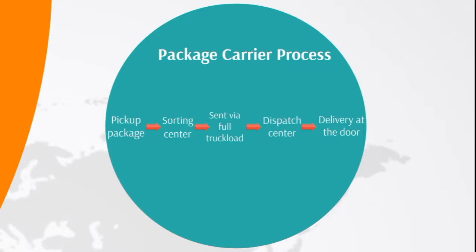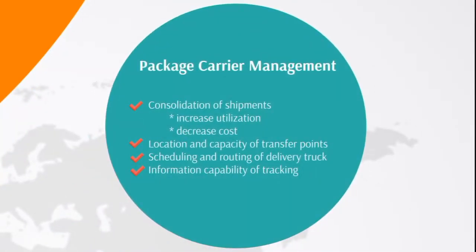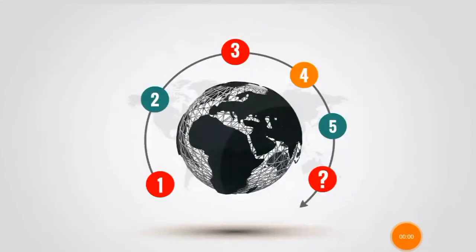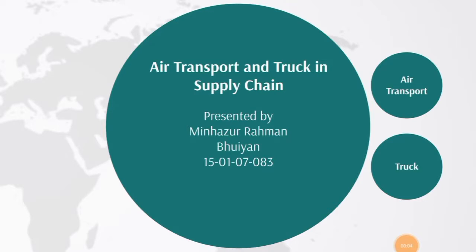Package carrier process. The steps of the package carrier process are: pickup, package sorting center, send by full truckload, dispatch center, and delivery at the door. Package carrier management includes: consolidation of shipments — gathering multiple shipments to one point to ensure proper utilization of carriers; location and capacity of transfer points — the location should be set at suitable places to ensure easy transportation and best service to customers; and scheduling and routing of delivery trucks — to ensure a lesser number of trucks and to decrease transportation cost. Courier companies also need sufficient information capability for tracking packages.